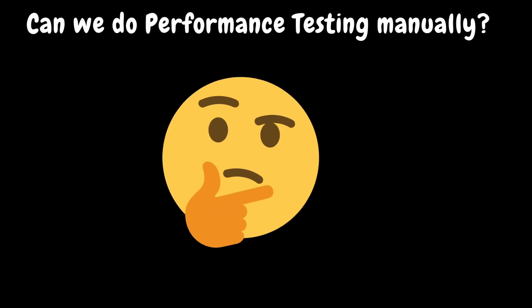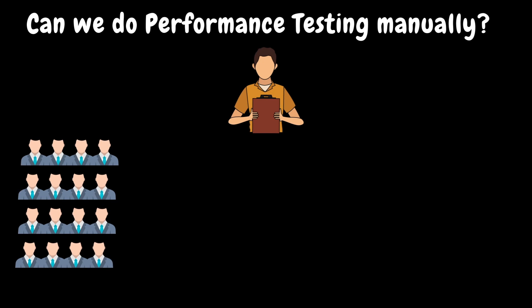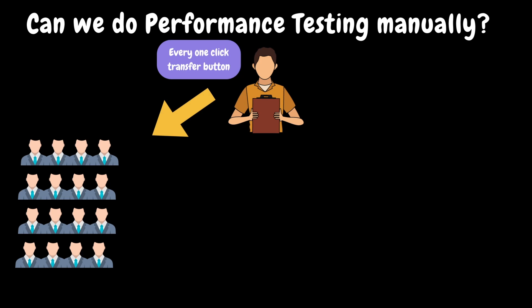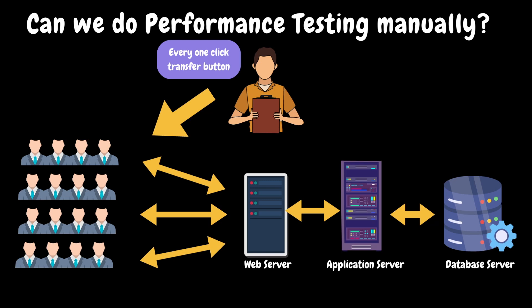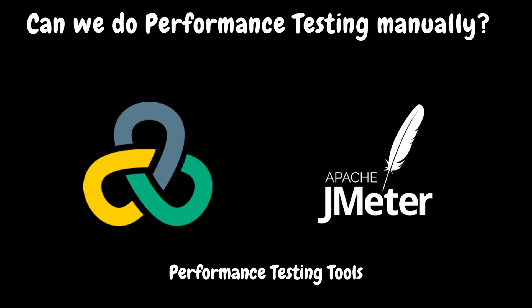Can we do performance testing manually? You must be wondering whether we can do performance testing manually without any tools. Well, performance testing will be carried out by generating a multi-user load which creates some concurrency on the system to identify the performance bottlenecks. For example, if a team lead instructs all members of a group to click on the transfer button at the same time, even if there would be some concurrent load generated manually, how do we reproduce the exact same situation again in case of any performance issues? How do we gather the performance metrics like each user's response time and server throughput? We cannot use functional automation tools as they are not suitable for generating multi-user load. Therefore, we need sophisticated performance testing tools like Micro Focus, LoadRunner, and Apache JMeter.